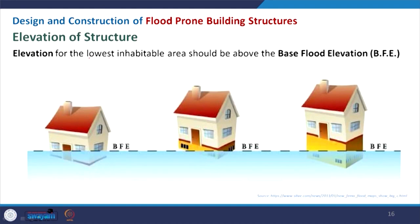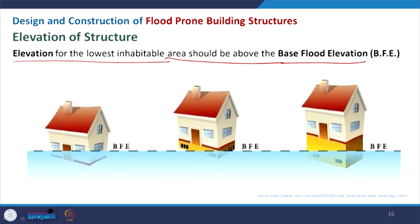Coming to the elevation of the structure — the lowest inhabitable area should be above the base flood elevation (BFE). If your building is at ground level with no plinth, it is not advisable. A plinth at exactly the BFE level is better but still risky, because continuous rain can raise the level further. You should make your structure well above the BFE to be relatively risk-free during a flood.